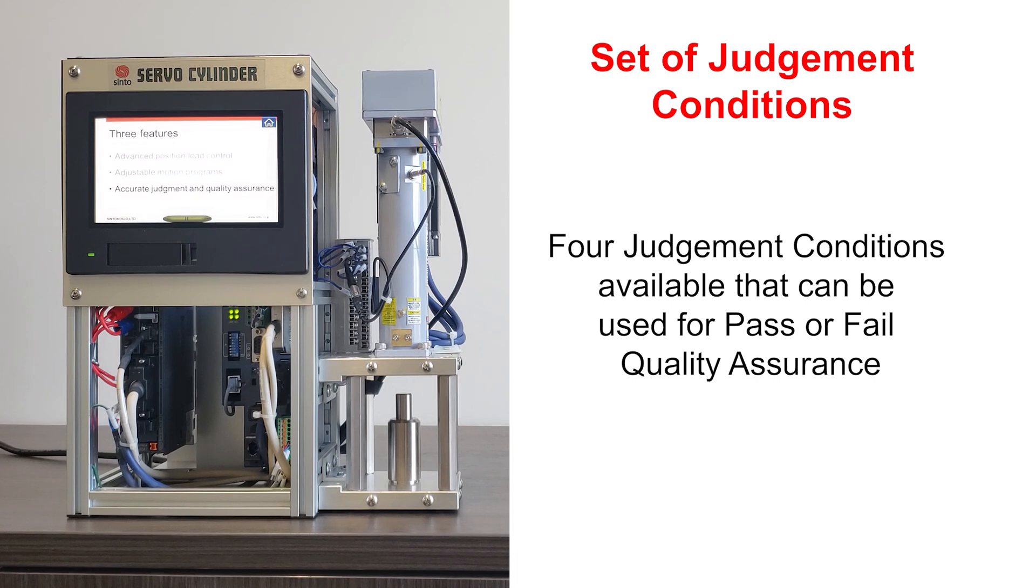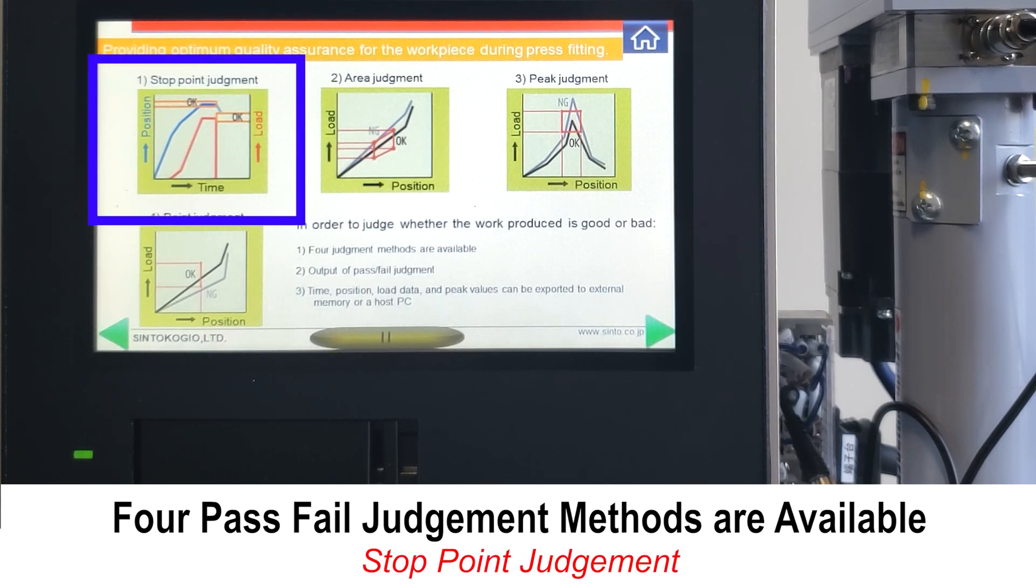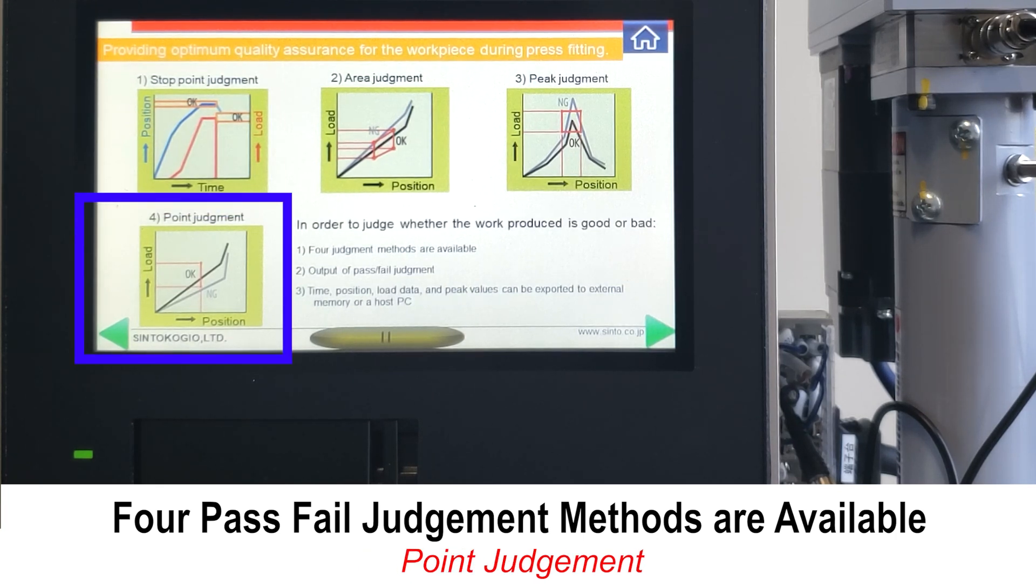The third feature is a set of judgment conditions. There are four judgment conditions available that can be used for pass or fail quality assurance: stop point judgment, area judgment, peak judgment, and point judgment.